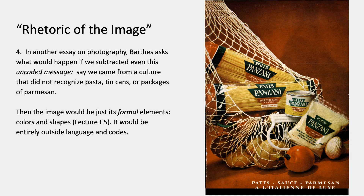These two essays — the Rhetoric of the Image and the other one — are both really eccentric and they kind of paint him into a corner. Because if you think this way, if you try to subtract away codes or levels of meaning or language and connotation, you end up in a funny place where you really can't say anything. It's a little bit like what I talked about in Concepts Lecture 2 about the relation between language and images, because he's subtracting away everything that he could put into language and ends up in a place where he can't say anything.